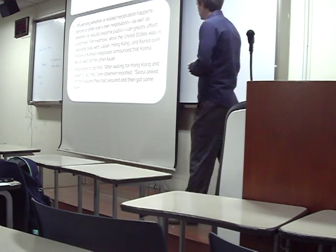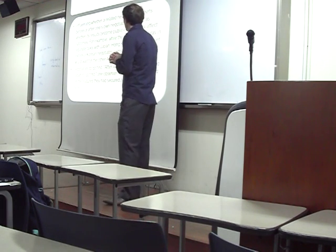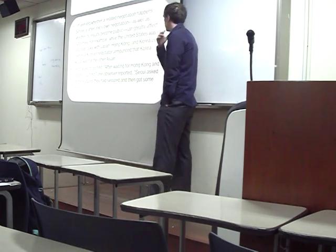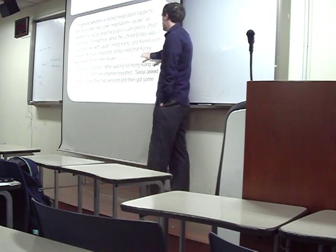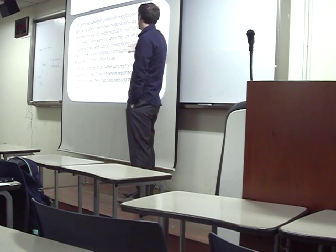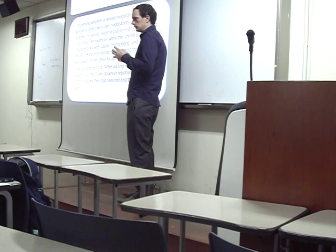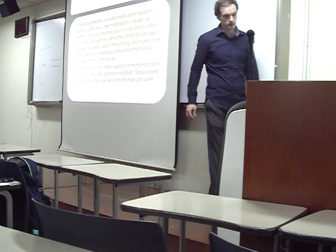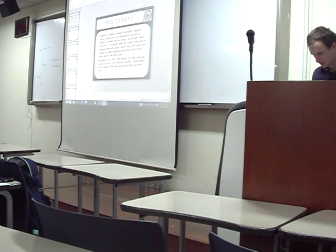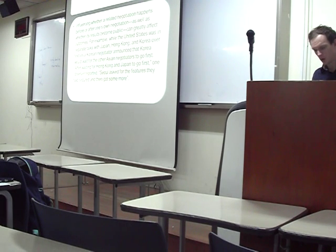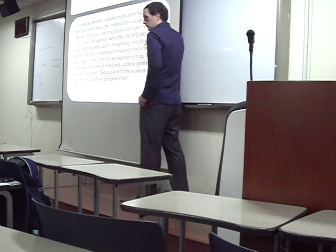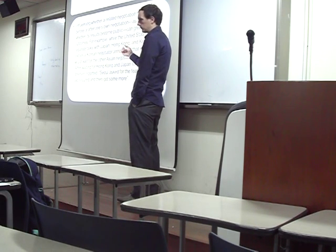So here's another example. Influencing whether a negotiation happens before or after one's own negotiation, as well as whether its results become public, can affect the outcome. For example, the United States was in separate talks with Japan, Hong Kong, and Korea over textiles. A Korean negotiator announced that Korea would wait for the other Asian negotiators to go first. Then after waiting for Japan and Hong Kong to go first, Seoul asked for all of the things that Japan and Hong Kong got, and they also got some more.